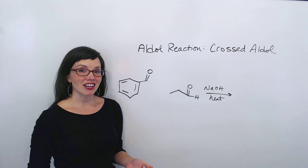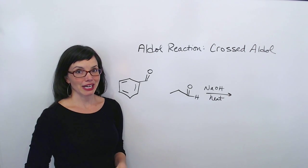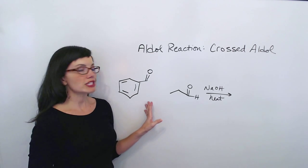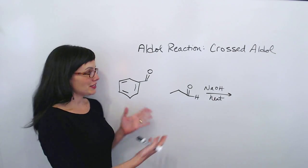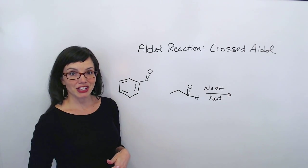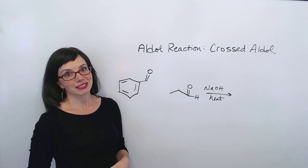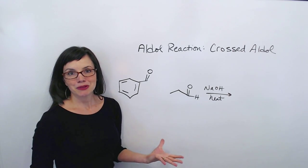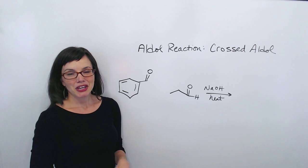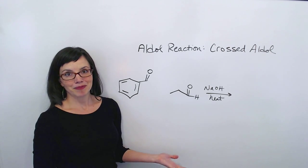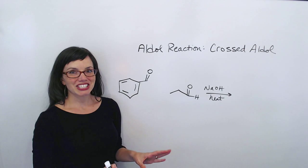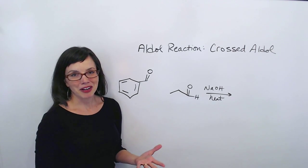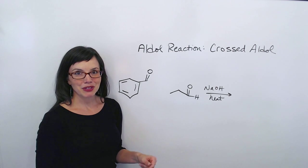This is an example of a crossed or mixed aldol reaction. We know that it's crossed because there are two different reactants rather than just one. These two reactants are going to combine with each other to produce one product. This might look really different than what you're used to, but it's actually just the same. Your first step is to choose an alpha carbon, and it's actually not as intimidating as you think.